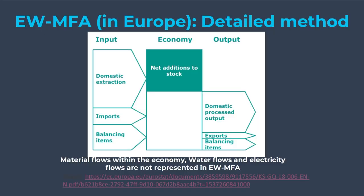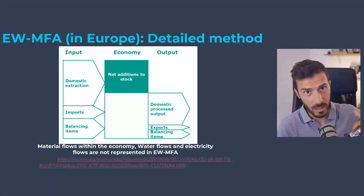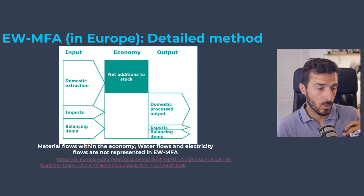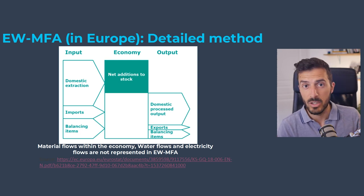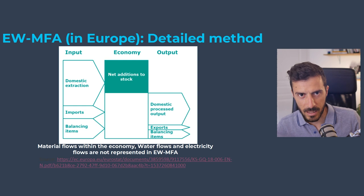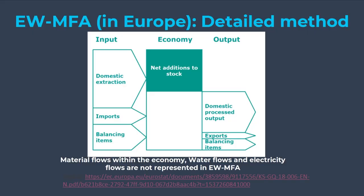You then process extracted materials in your economy. You also input imports — stuff that does not come locally but is brought into your economy. These can be raw materials, secondary materials, processed materials, or finished goods. Finally, you also have balancing items, which I'll explain in a second. Now going directly to outputs: the domestic processed output, which in other terms is just pollution to air, soil, and water.